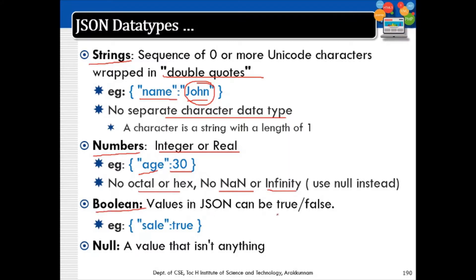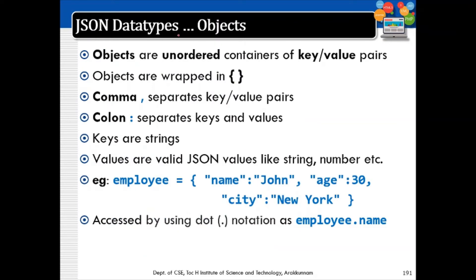Boolean values in JSON can be true or false — there are no double quotes; true is a data type itself. Null means a value that isn't anything. Objects are unordered containers of key-value pairs, wrapped in curly braces. A comma separator is used between key-value pairs, and a colon separates the key from its value. Keys are generally strings.